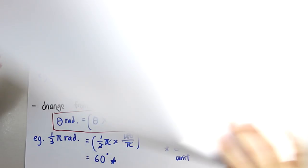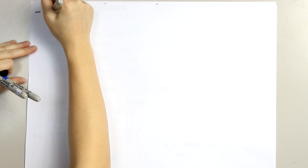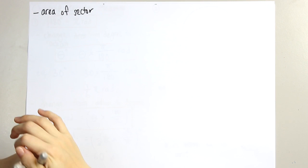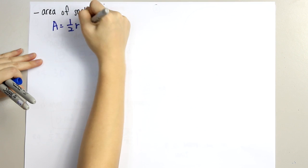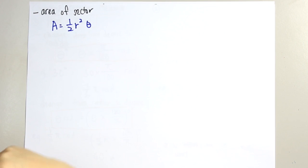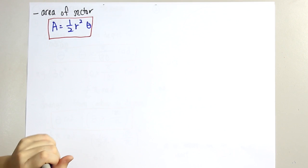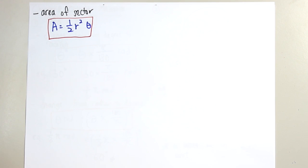Now we go into finding the area of sector. The formula to find the area of sector is A equals 1 over 2 r squared theta, where A is the area, r is the radius, and theta is the radian of the angle. Take note that theta must be in radian unit.